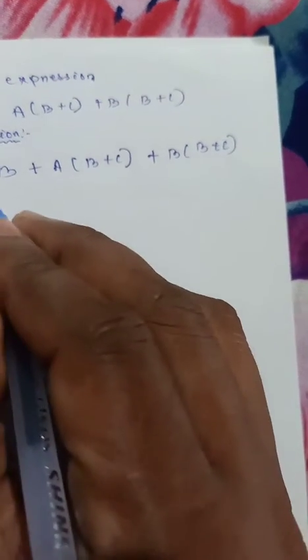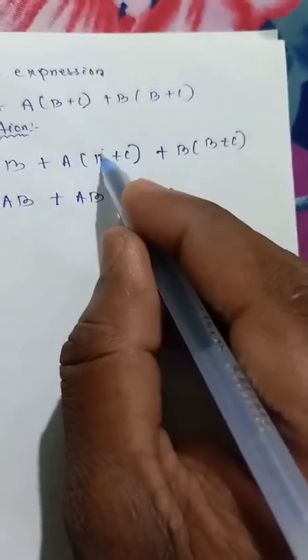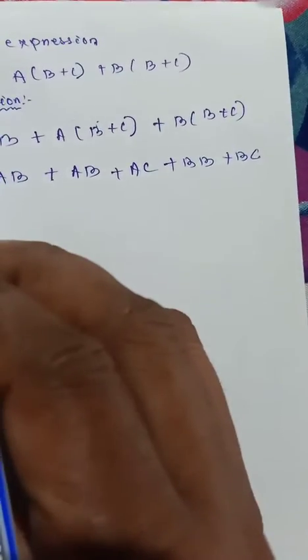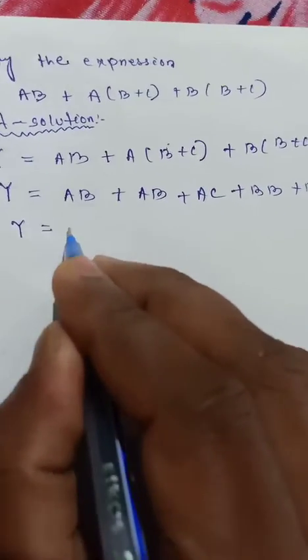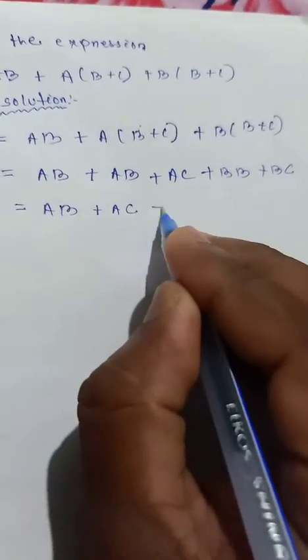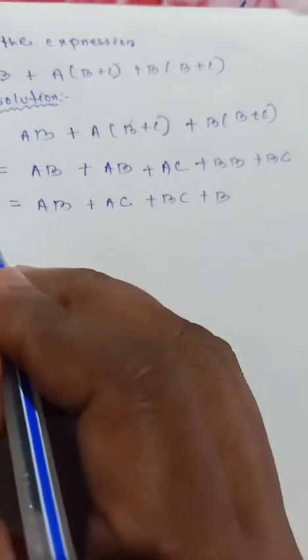Now, y is equal to — multiplying out — ab plus ac plus ab plus ac plus bb plus bc. So y is equal to ab plus ac plus bc plus b.